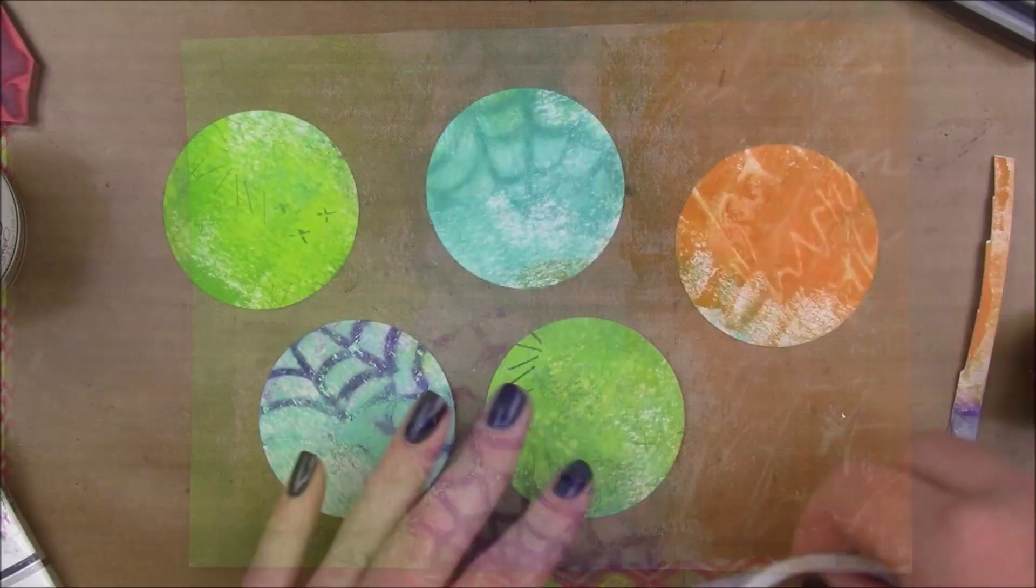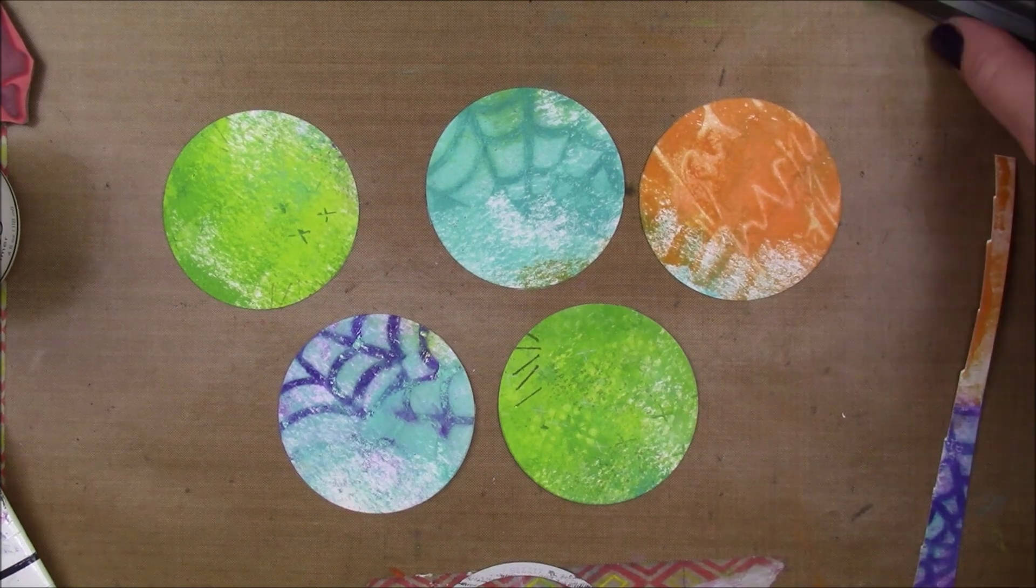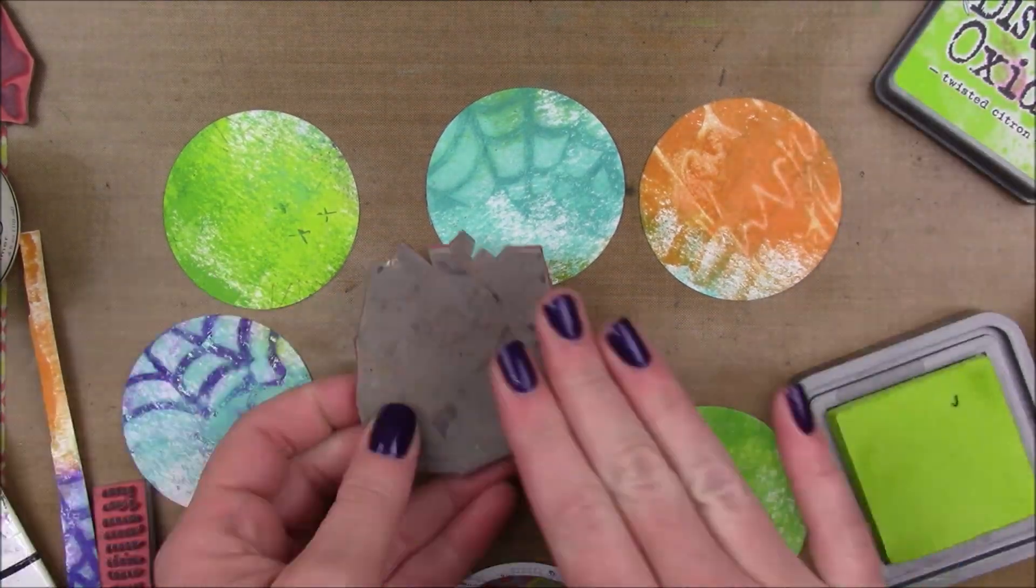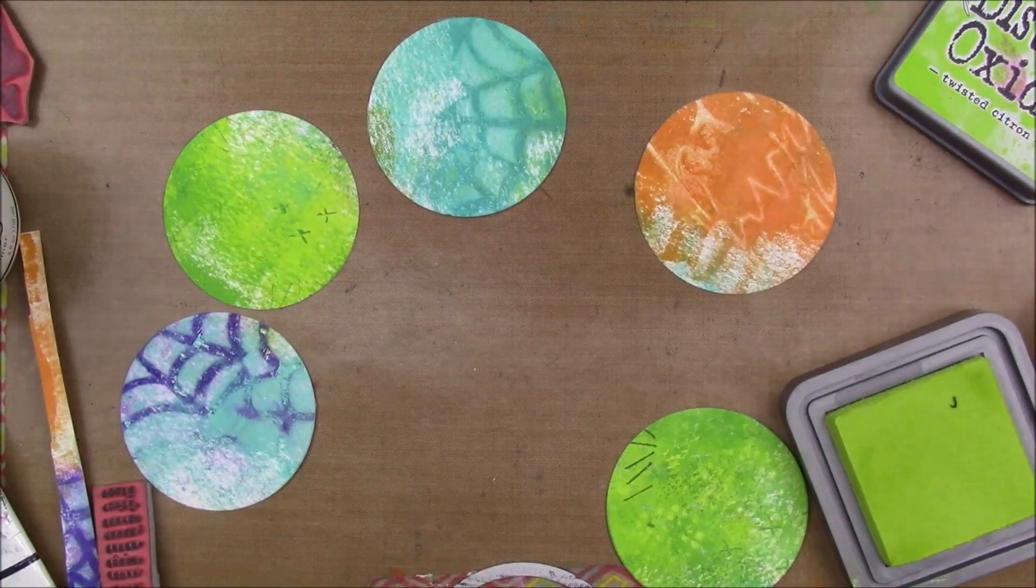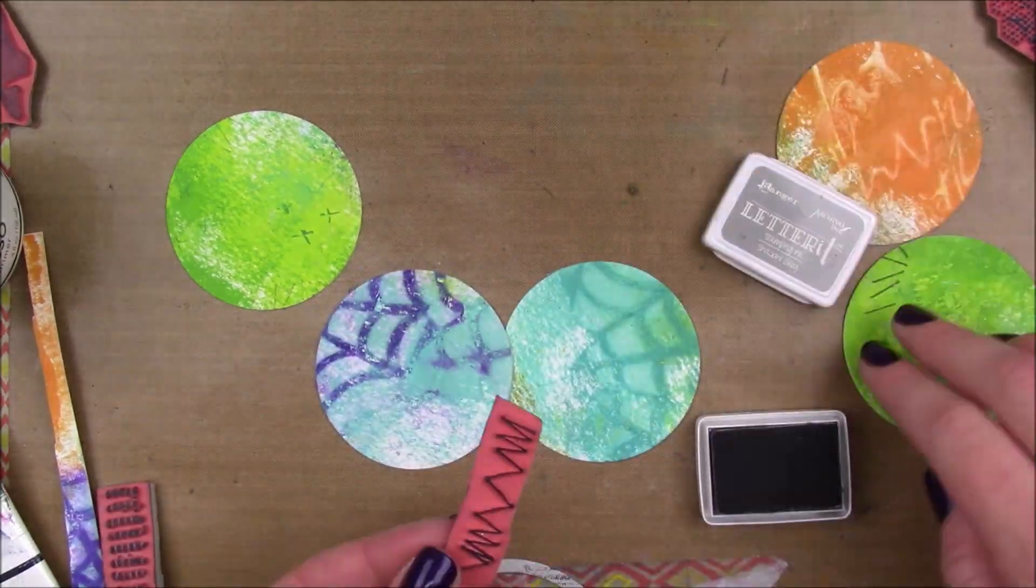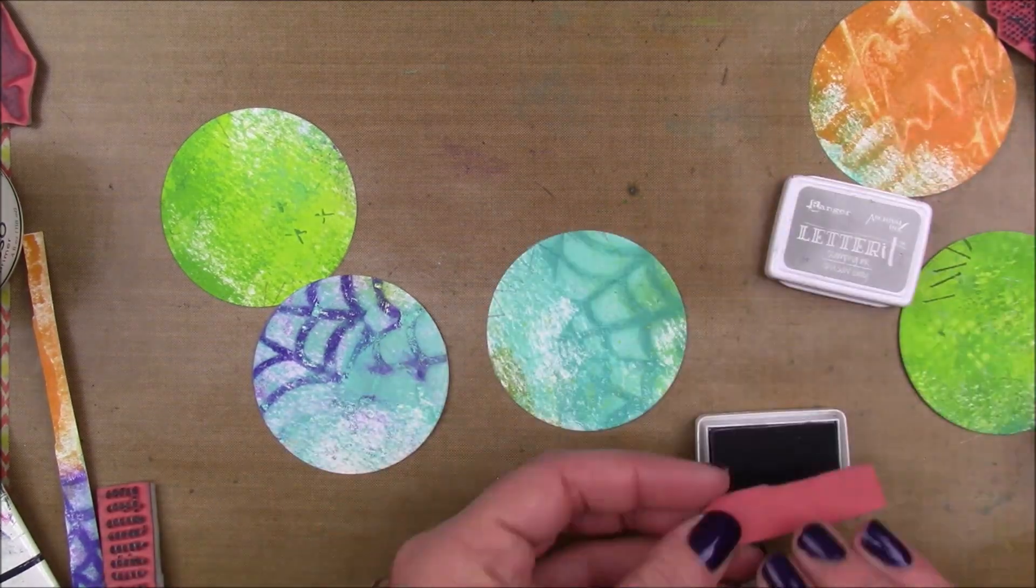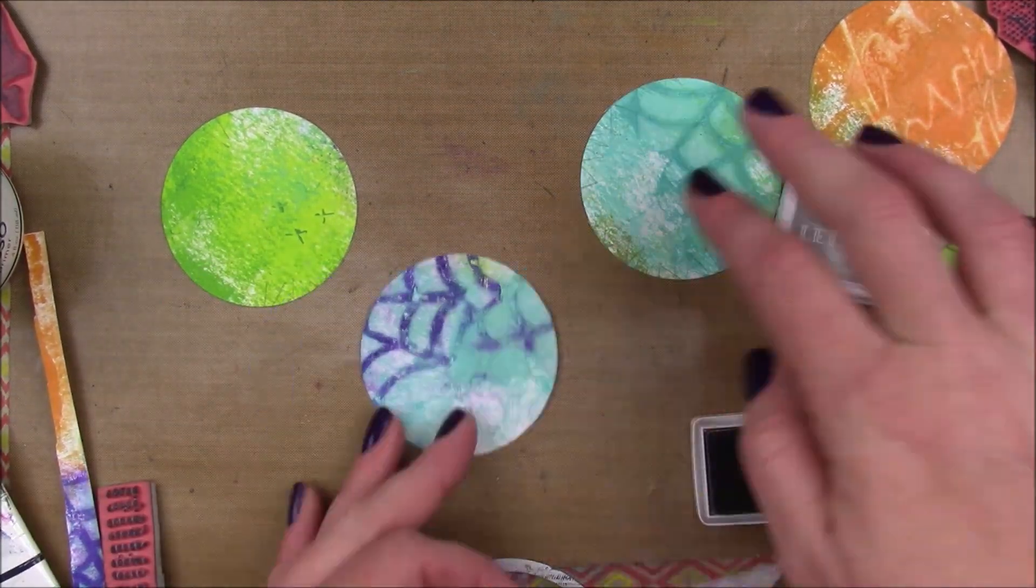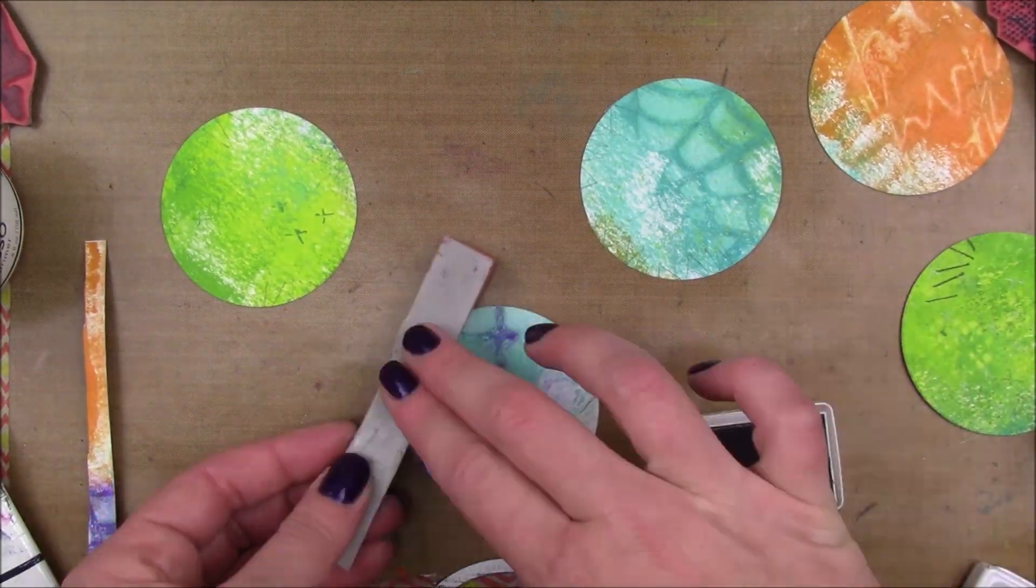Now I'm just taking a circle die and seeing where I want to die cut my coins from. So I die cut five of them, and then I decided that I was going to do my stamping after I had cut them out. Like the first strip of color I did, I did the stamping, but I thought it would make more sense to cut them out and then do the stamping.